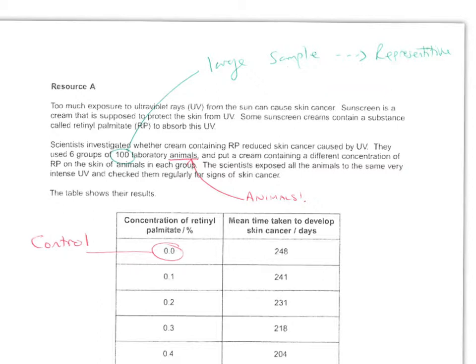Should retinal palmitate be used in sunscreen on humans? The one positive we've got is we've got 100 which is a large sample. So the results, whatever results we have we can say they're fairly representative. But there's a lot of no points with this.